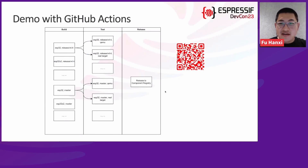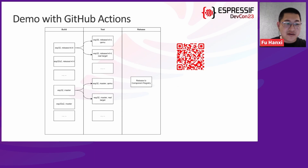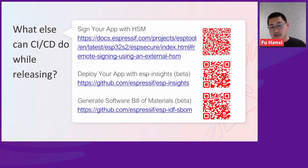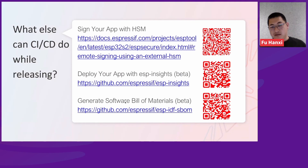So the build stage includes build matrix jobs and test matrix jobs, and on the release stage, we release to the component registry — this is the complete GitHub Actions workflow. Finally, what else can CI/CD do while releasing? First, you can sign your app with HSM — a way to secure built binaries with hardware. You may also deploy your app with ESP Insights, a tool to deploy built binaries into network-connected devices. We can also generate a Software Bill of Materials, a file that shows all the dependencies. I've also posted all the QR codes and links here.